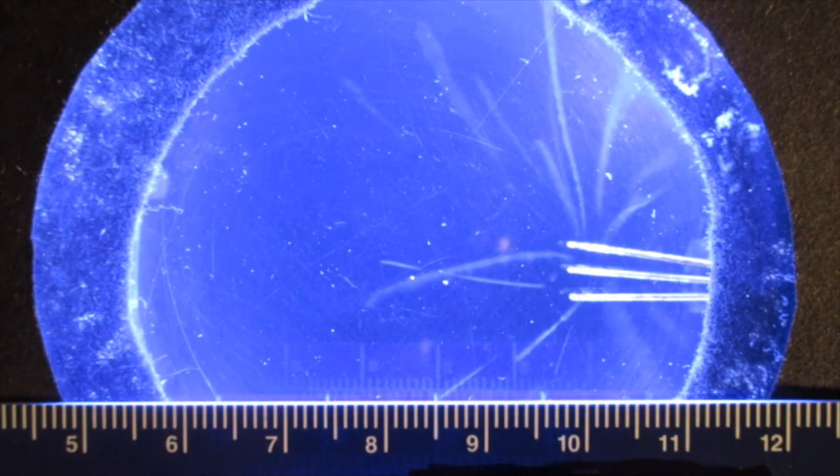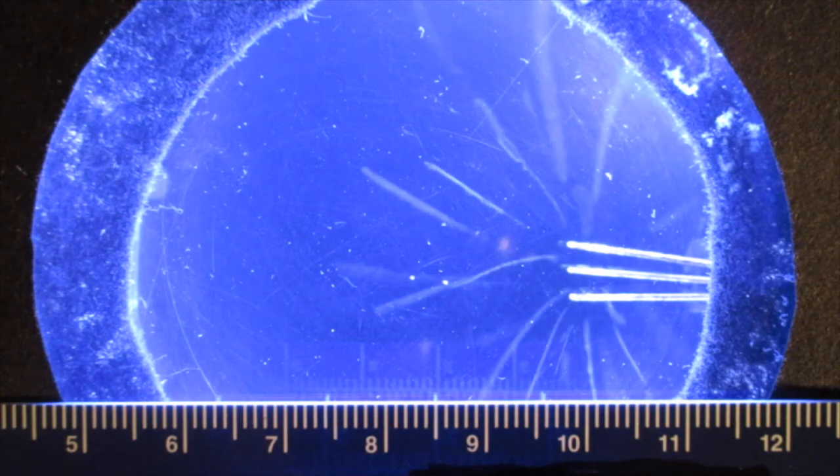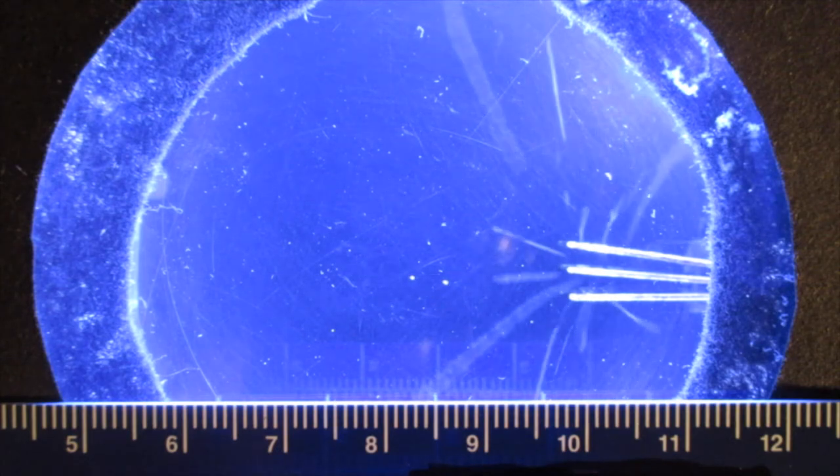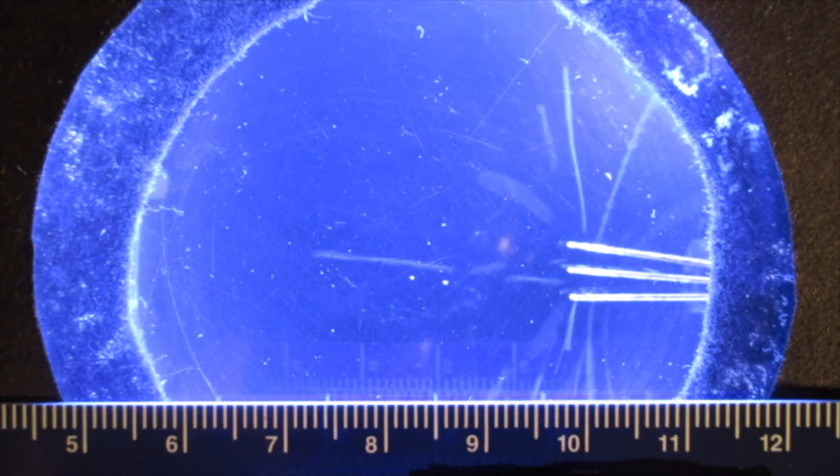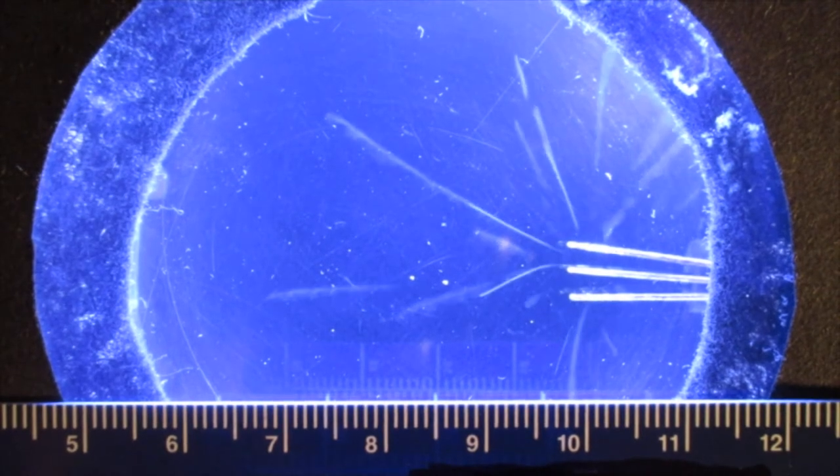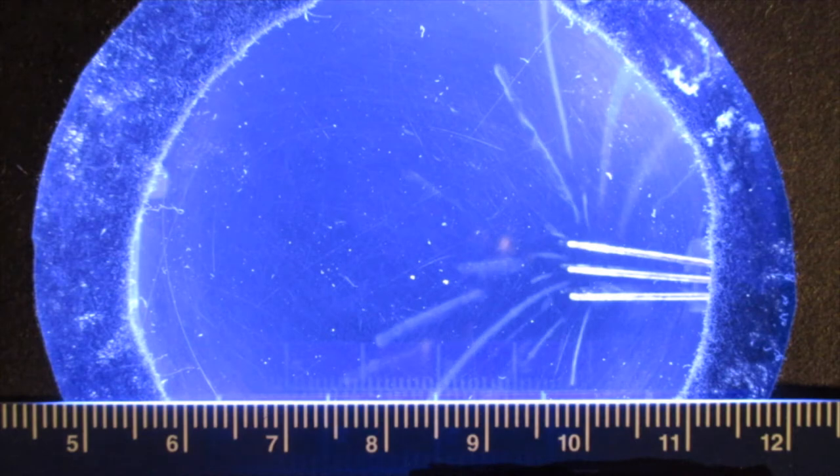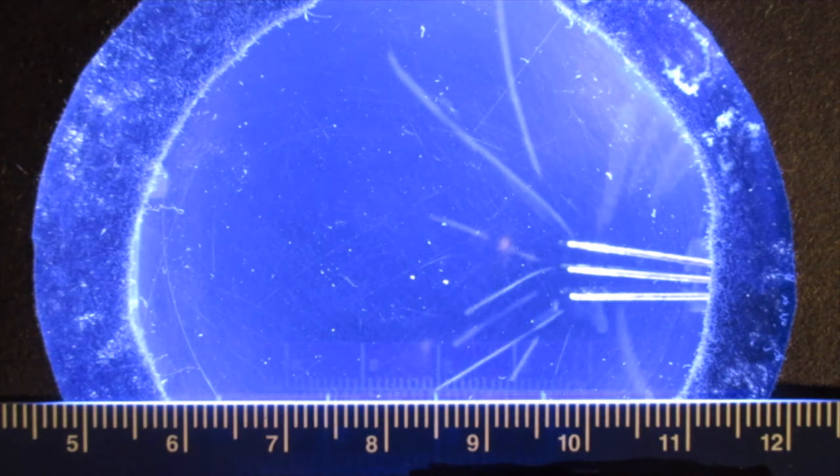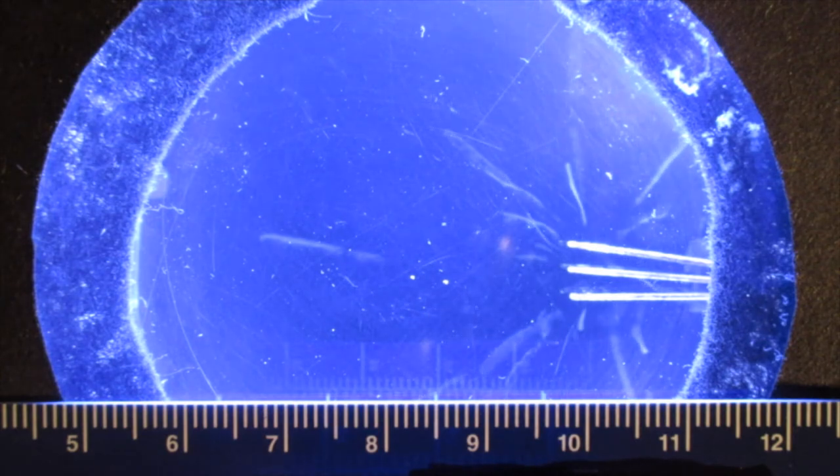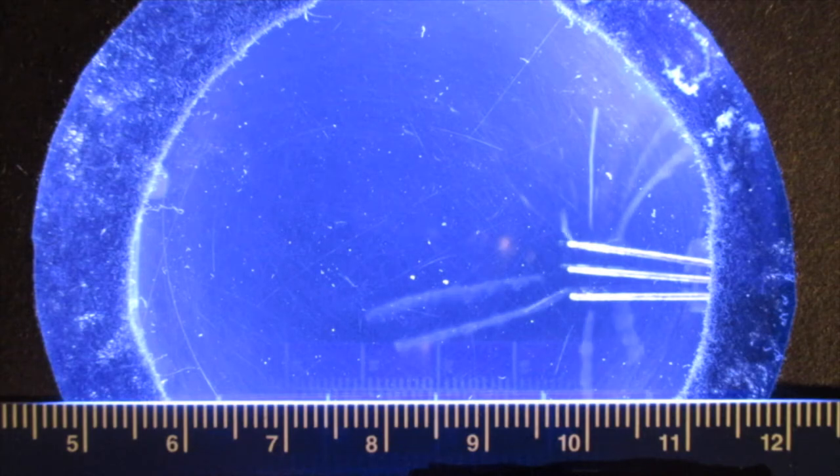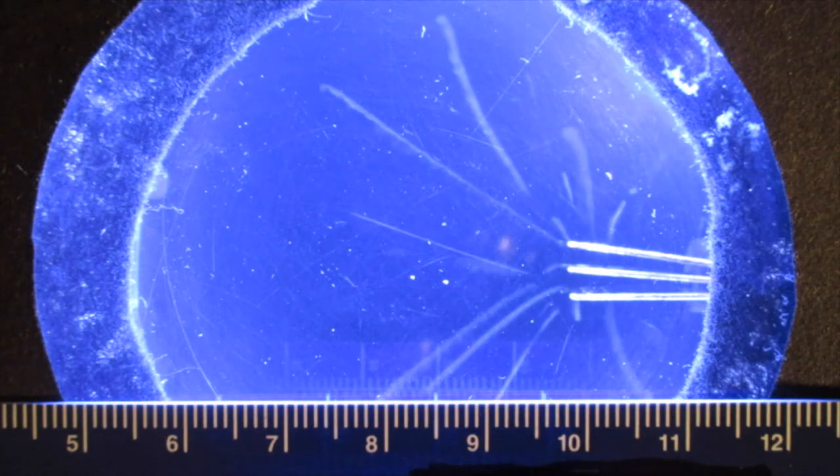So, the chamber is working. It's producing nice visible tracks in the chamber. As you can see, they are emanating from the needles that are coated in the lead-210. Let's watch for a little while and I invite you to see if you can distinguish two different types of tracks.